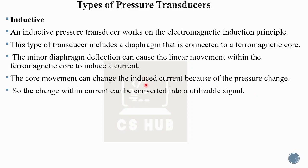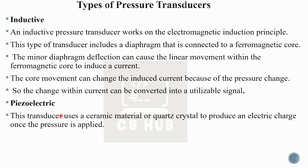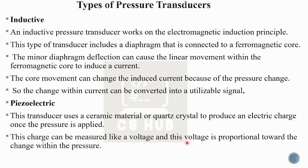The last type is piezoelectric. Piezoelectric transducers are based on the piezoelectric effect using piezoelectric crystals. When pressure is applied to the crystals, deformation occurs and an electrical signal is produced — a voltage difference is created. This transducer uses a ceramic material or quartz. Quartz is a crystal that, because of the piezoelectric effect, produces an electric charge once pressure is applied. This charge can be measured as a voltage, and this voltage is proportional to the change in the applied pressure.